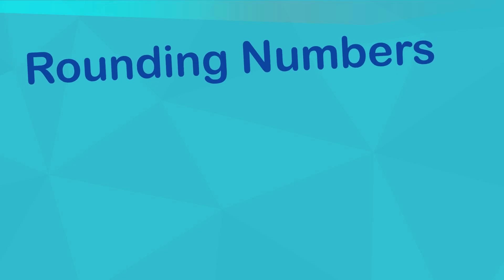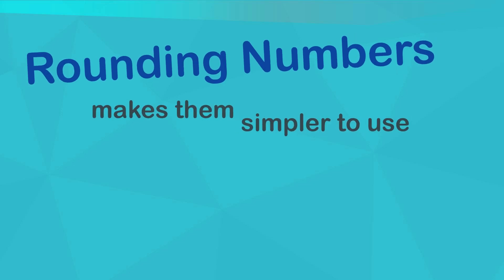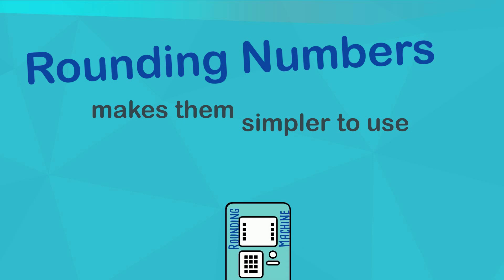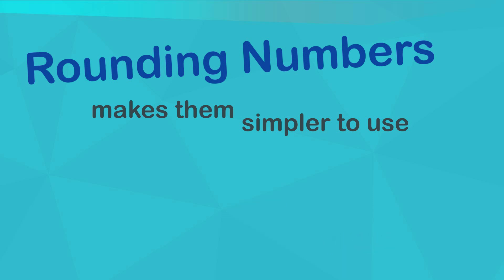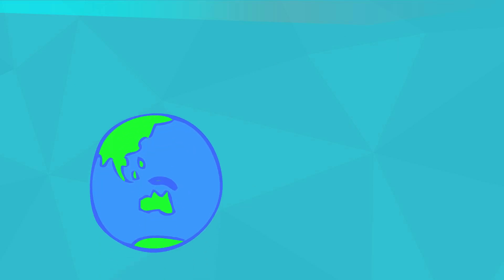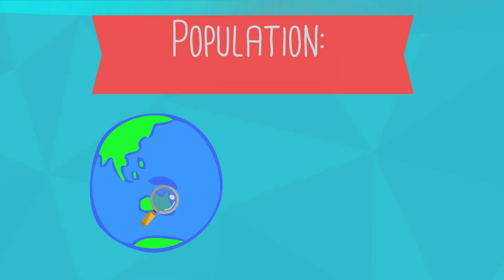Rounding numbers. When we round numbers, we make them simpler to use while keeping the value close to that of the original. Rounded numbers are often used in everyday life. For example, we might hear that the population of a city is 350,000. The actual number is probably slightly under or slightly over this. For most purposes, the exact population of the city probably doesn't really matter, and so the number is rounded.